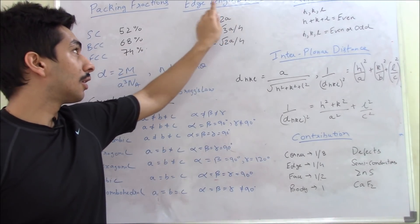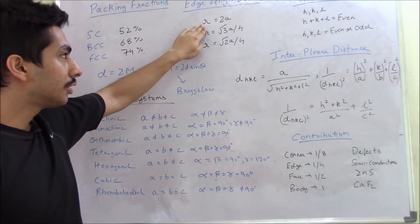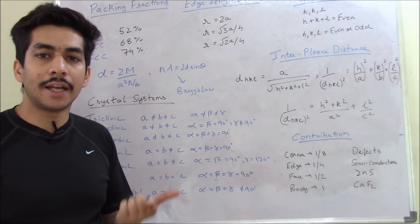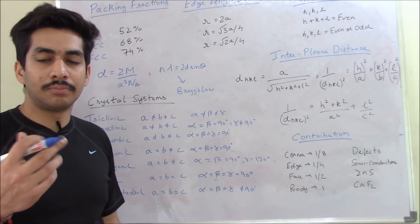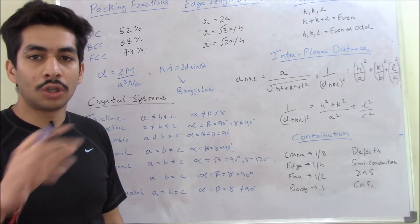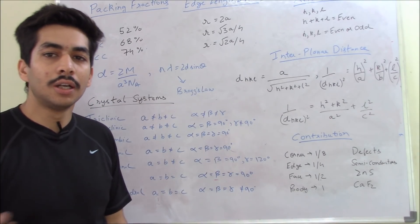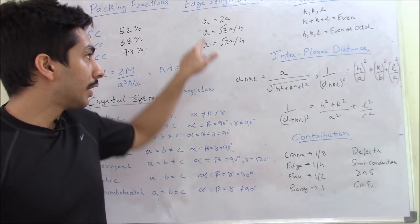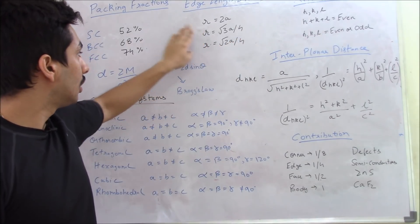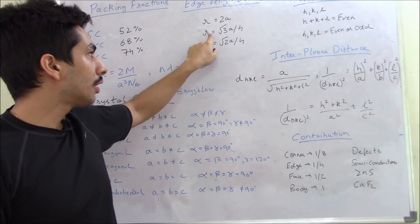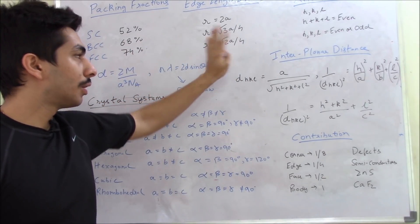Then we talk about the relation between edge length and radius. For simple cubic, the relation is R = A/2, where A is the edge length. A cube has all edges equal in length, so you can write it as A. Similarly for BCC, the relation is R = √3A/4, and for FCC, the relation is R = √2A/4.